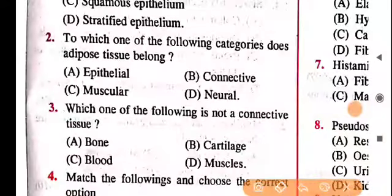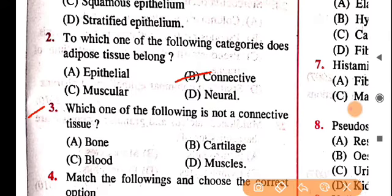I hope this concept is clear. Next: which of the following categories does adipose tissue belong to? As mentioned earlier, adipose tissue is an example of connective tissue.